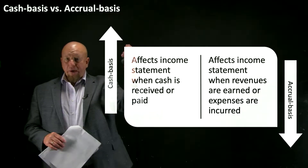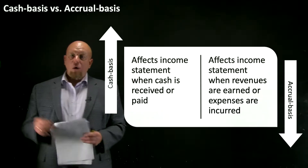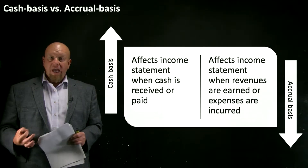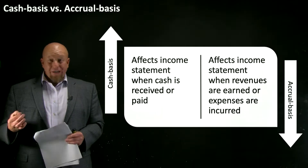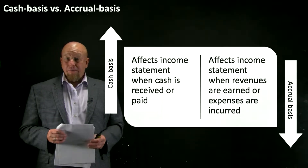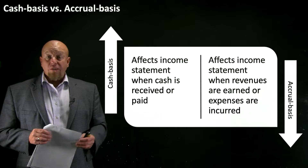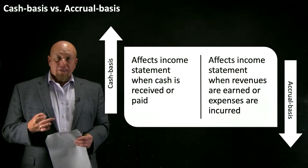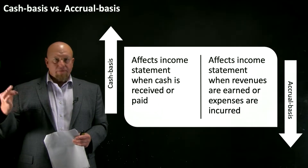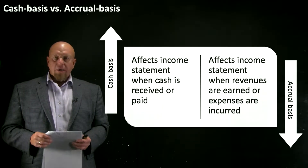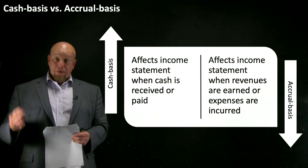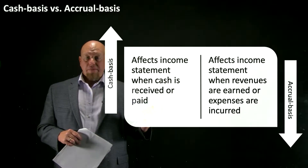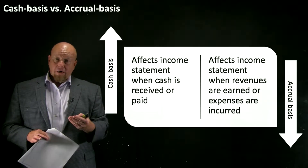With cash basis, transactions only affect the income statement when we receive cash or when we pay cash. So if we didn't receive the money from our customers, we would not include that as revenues on our income statement. And if we didn't actually write a check or send money via Venmo or PayPal or some electronic transaction — if we didn't pay for it — it's not going to show up on the income statement under cash basis. Cash basis is simple in that regard.